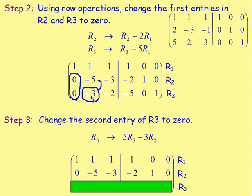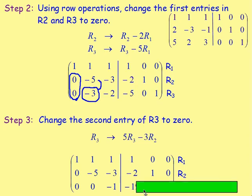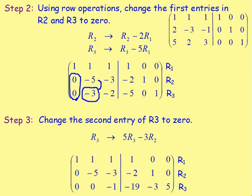So, if we times that by 5 take away 3 times 0, that's just going to be 0. That will also give us 0. 5 times row 3 — so 5 times negative 2 — take away 3 times row 2 gives us negative 1. If we do 5 times negative 5 take away 3 times negative 2, that gives us negative 19. 5 times 0 take away 3 times 1 gives us negative 3. And 5 times 1 take away 3 times 0 gives us 5.